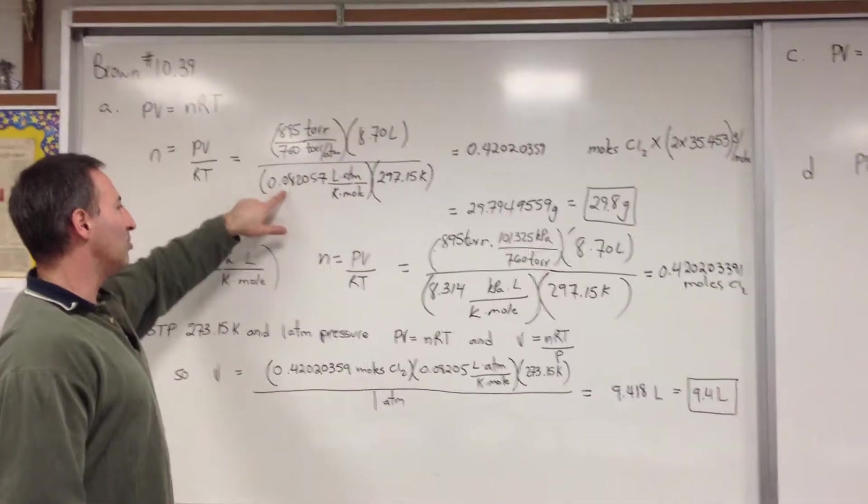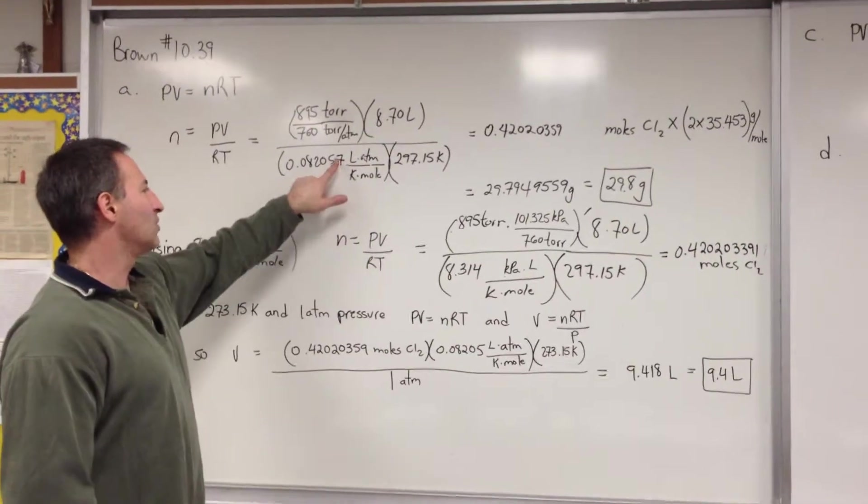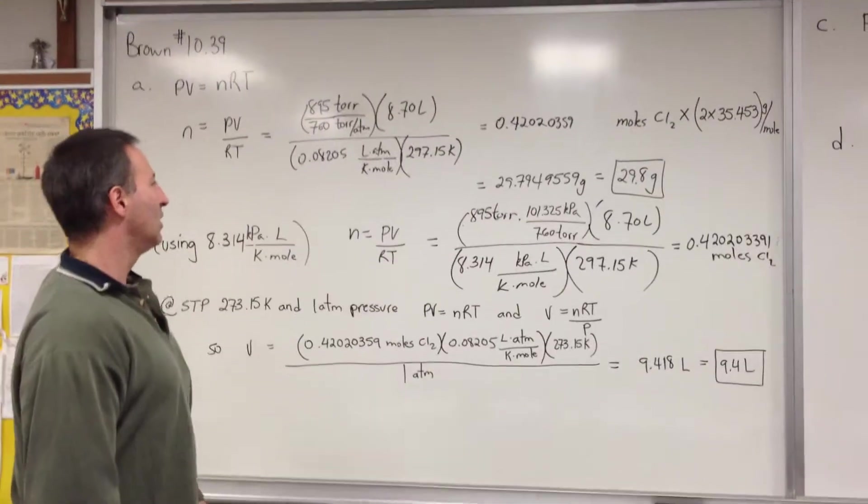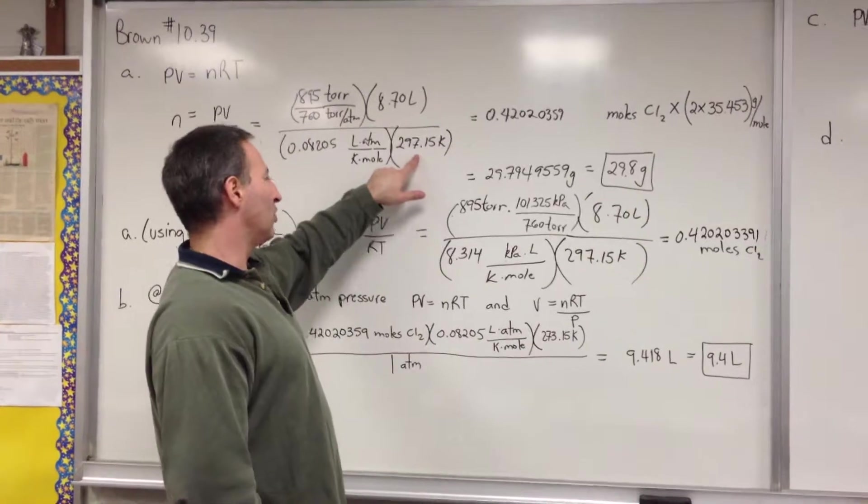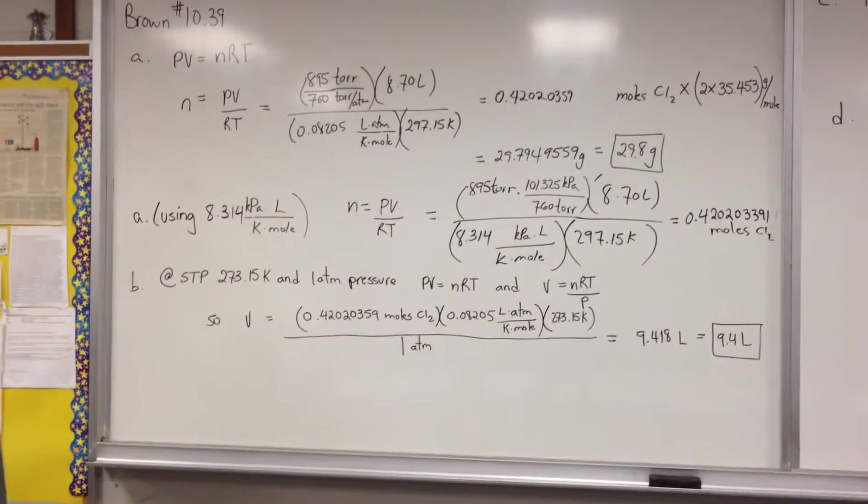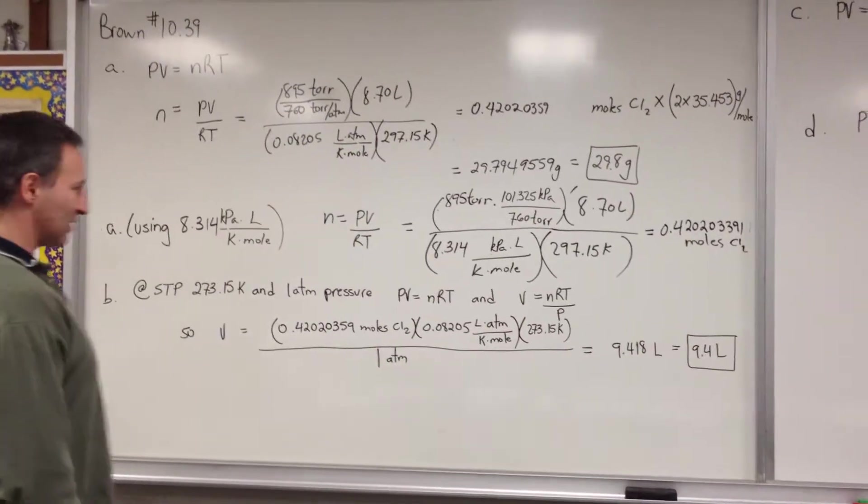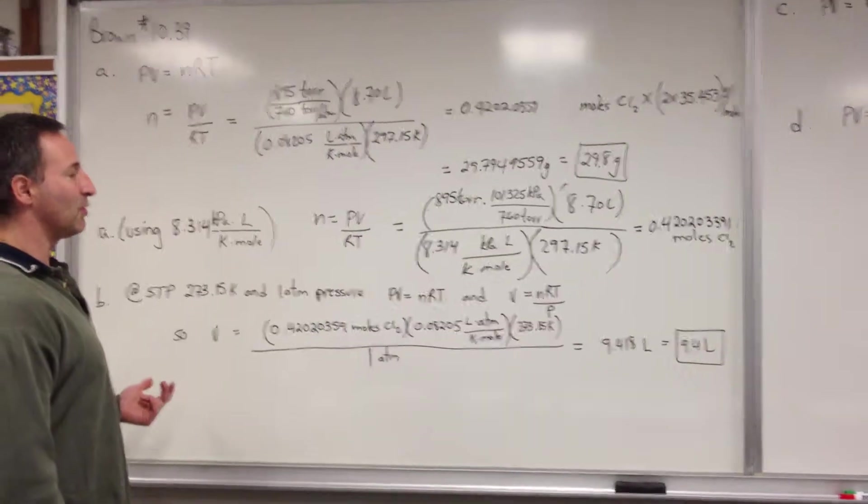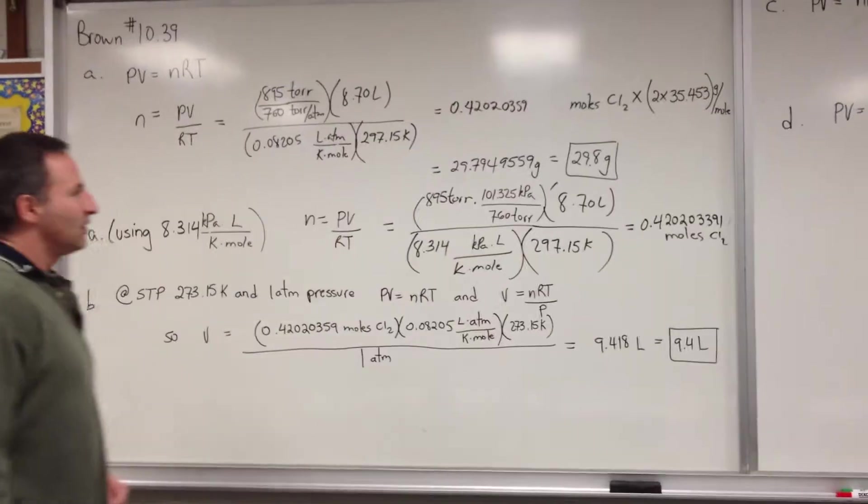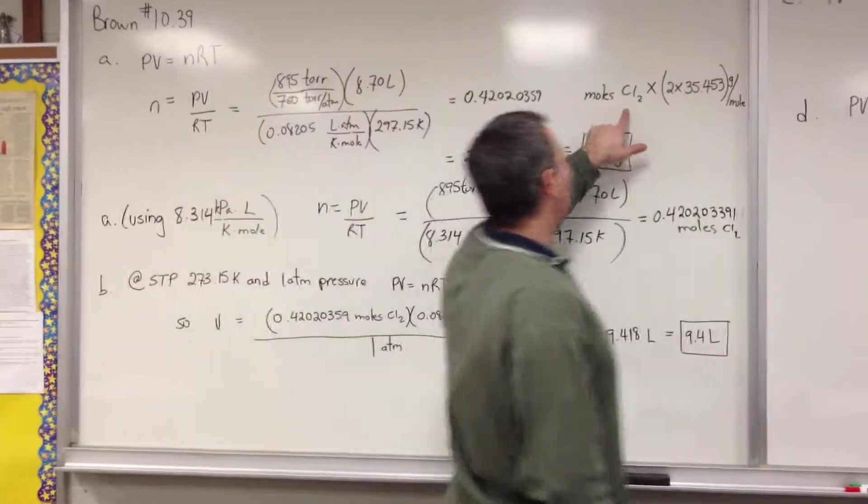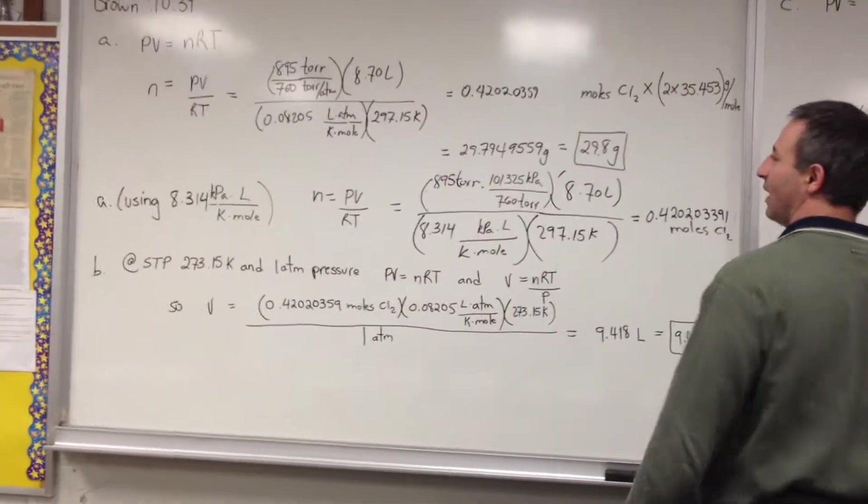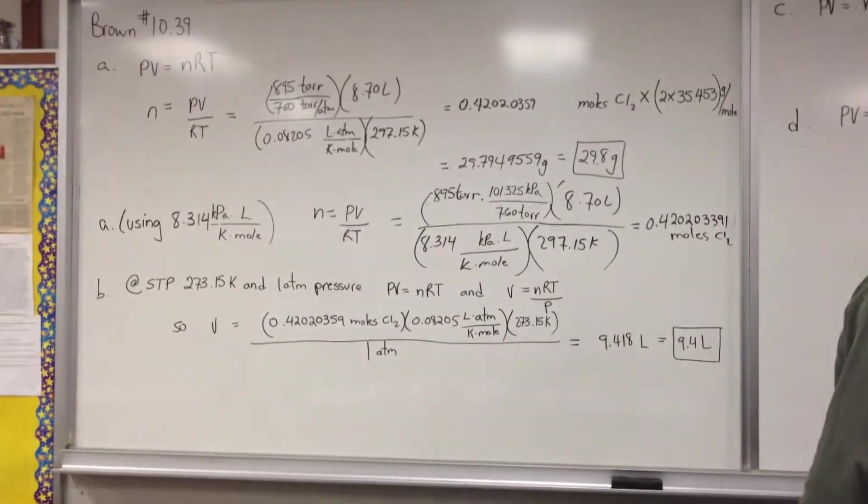We use this value of R, 0.82057. Actually, I used just up to 5. I didn't put in that 7 in the calculation. Converting the temperatures, the Celsius temperature has to be converted to the absolute temperature scale, 297.15 Kelvin. We add 273.15 to the Celsius temperature to convert to Kelvin. You will get that there are 0.4202 moles of chlorine gas. We then multiply by the molar mass of chlorine gas to give 29.8 grams of chlorine as present after significant figures are accounted for.